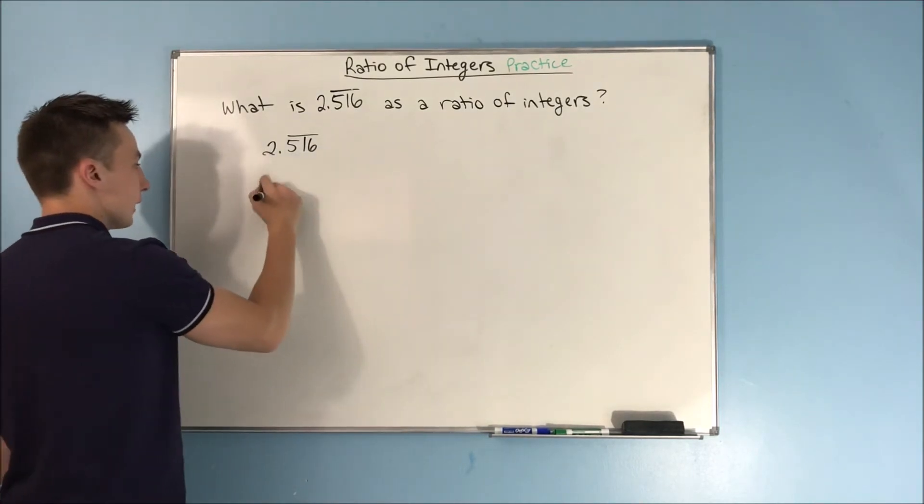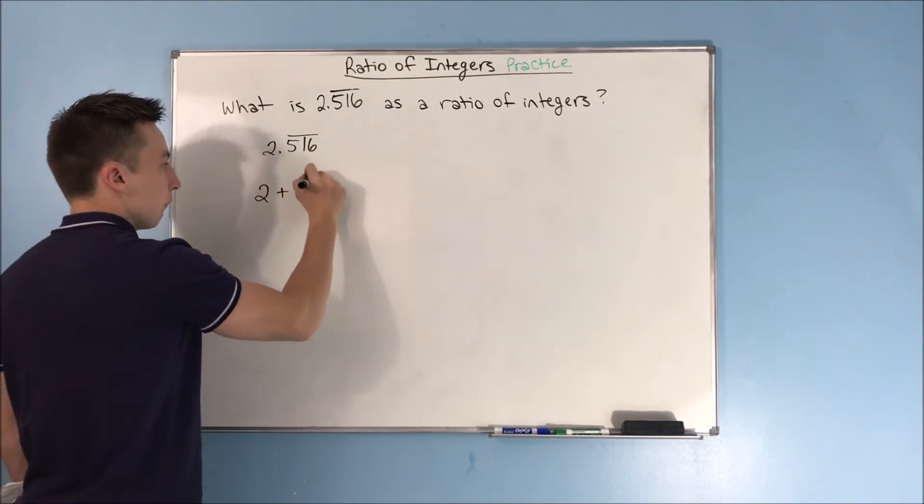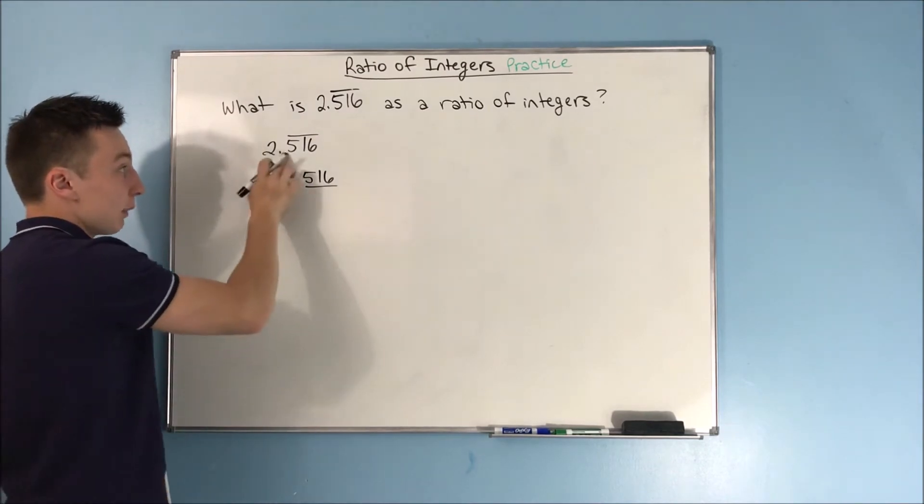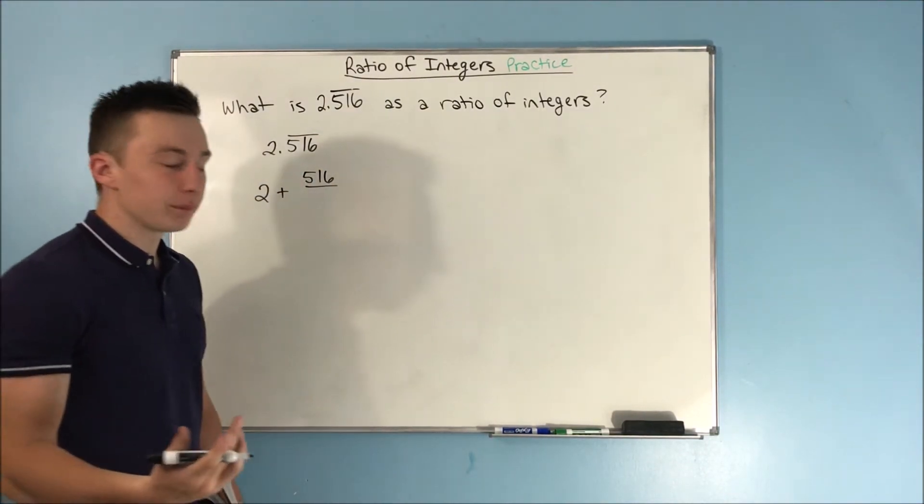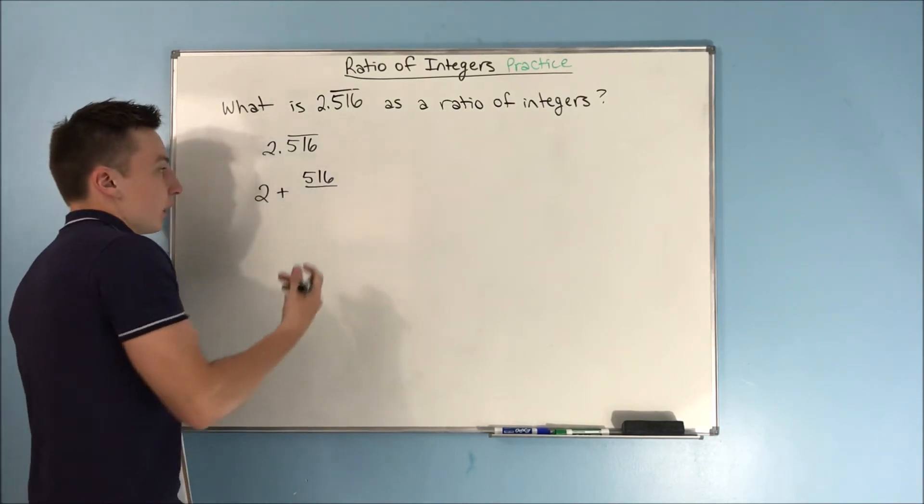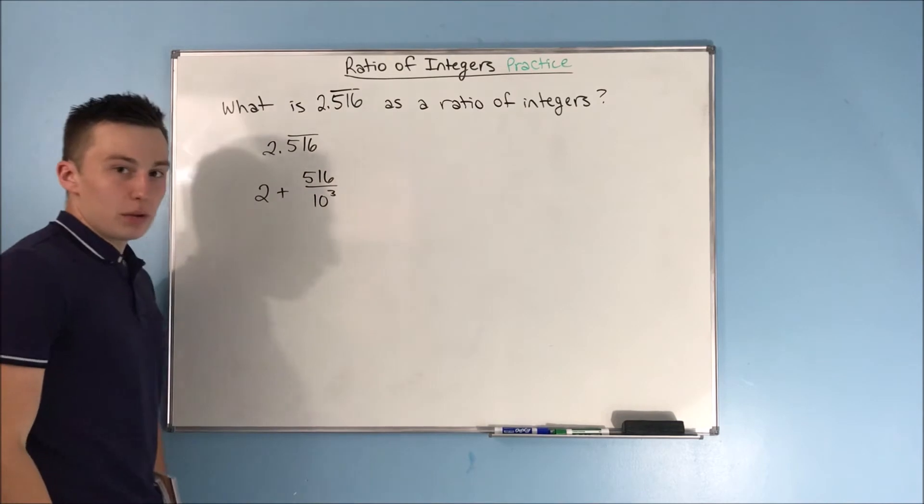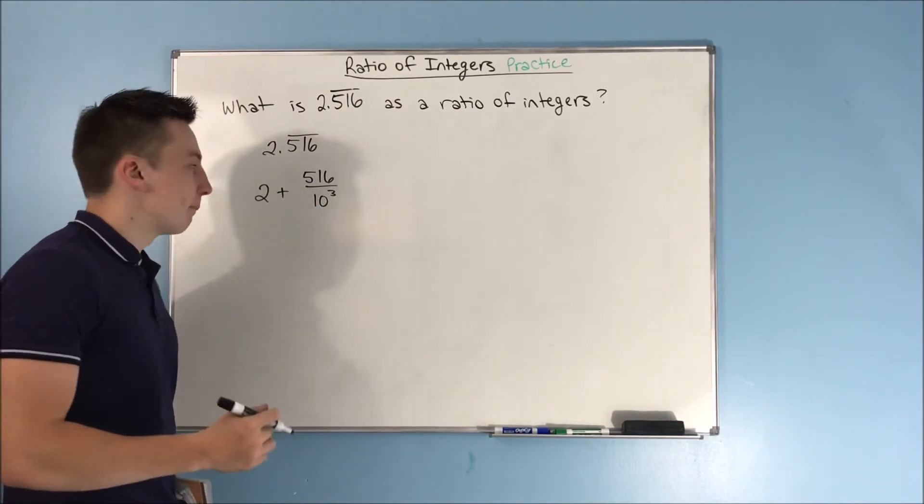So this 2 is going to stand alone out here. Now, how do we get a 0.516 from 516? Because we have to express this as 0.516 as a fraction. If we just divide 516 by 10 cubed, by 1,000, well, that's how we get 0.516.